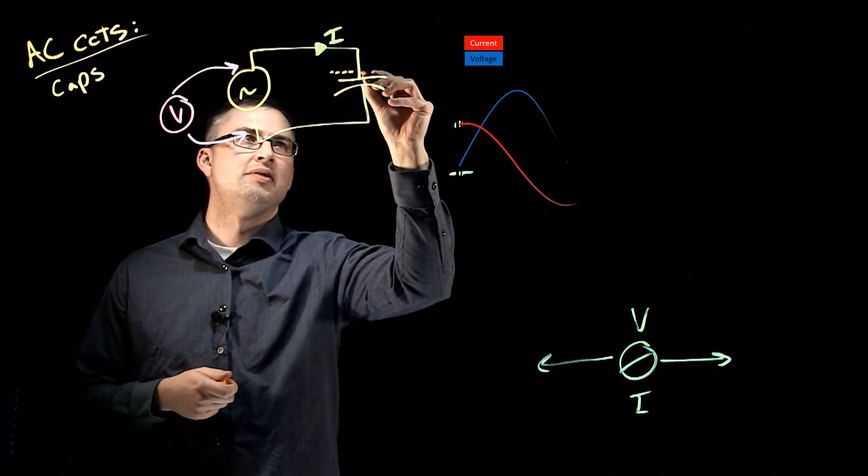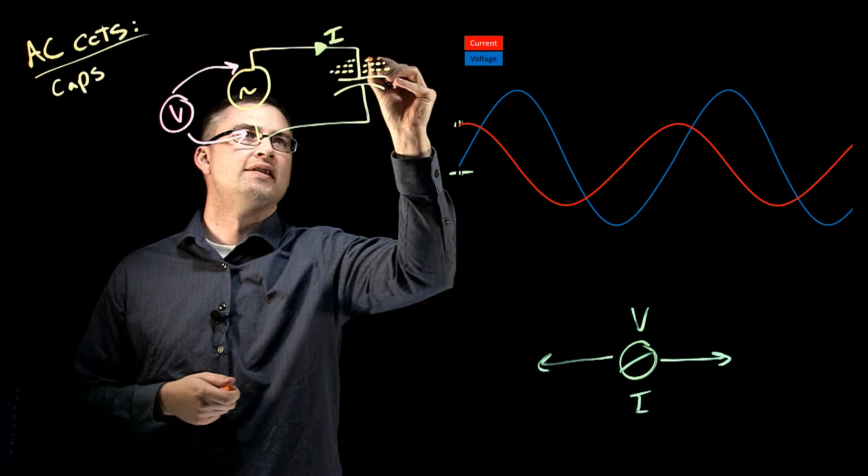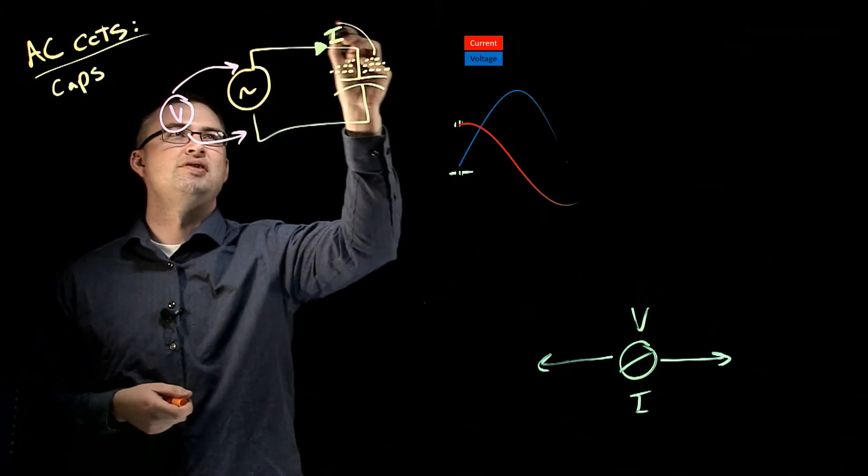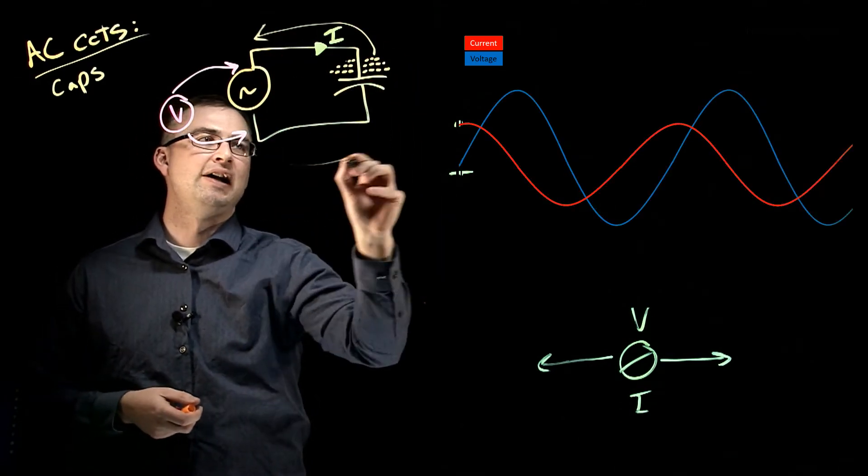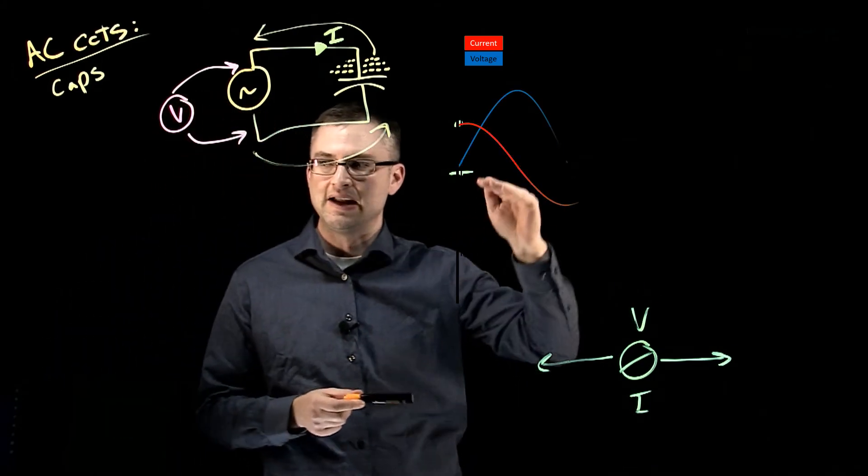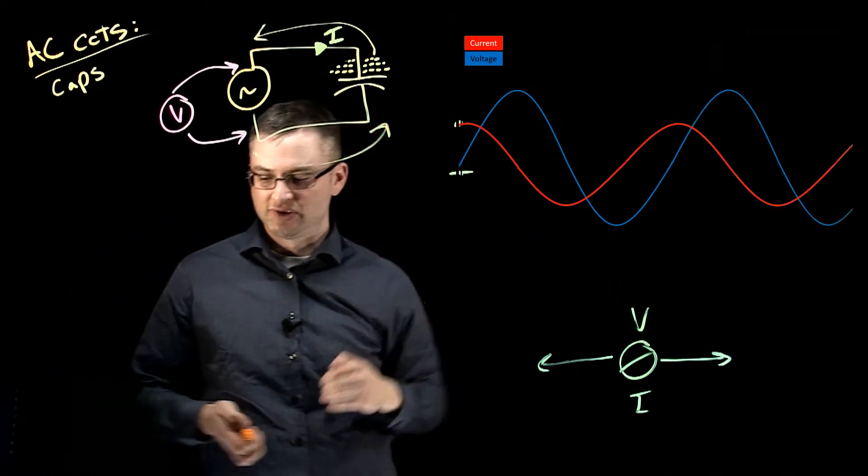We've got a charge on our plate. And when the source drops to zero, that charge is now free to circle back in that circuit. So that's how we're able to see that. We've got maximum current when voltage is at its minimum.